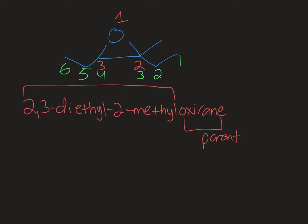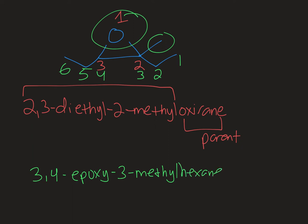The base name for the IUPAC style naming would be hexane, and then the epoxide would be a substituent, as would this methyl group, because it's not part of the ring. So the IUPAC name for this would be 3,4-epoxy-3-methylhexane.